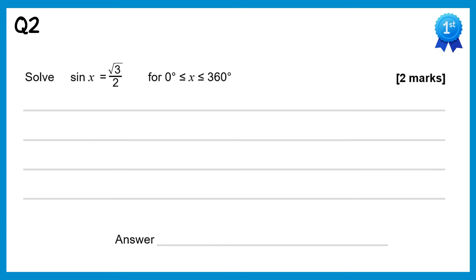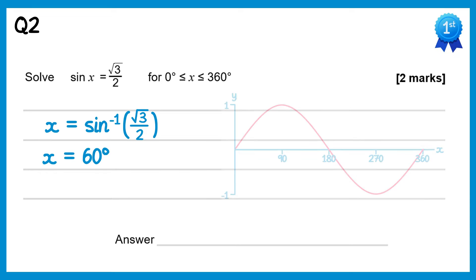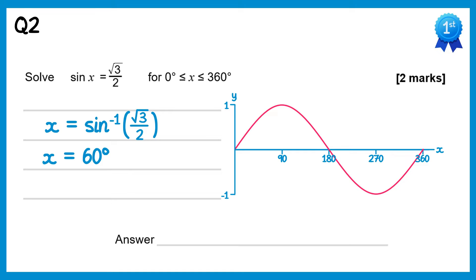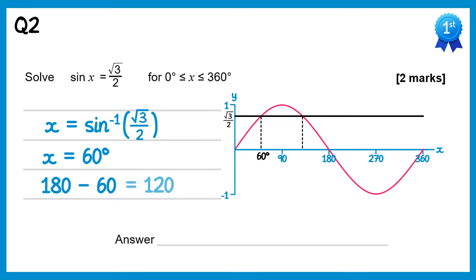For this next question we do inverse sine of square root 3 over 2. This is an exact value so you should know this one — it's 60 degrees. We draw the graph of y equals sin x and use the symmetry to find the other solution. Drawing a line at square root 3 over 2, there are two solutions. We've got the left one at 60 degrees, so we do 180 take away 60 to get the other one at 120. So the two solutions are 60 degrees and 120 degrees.